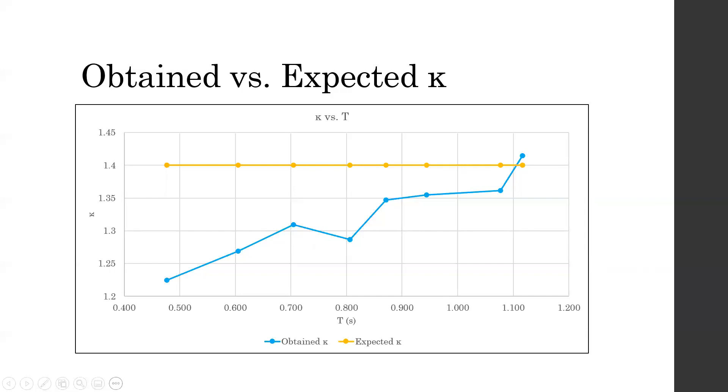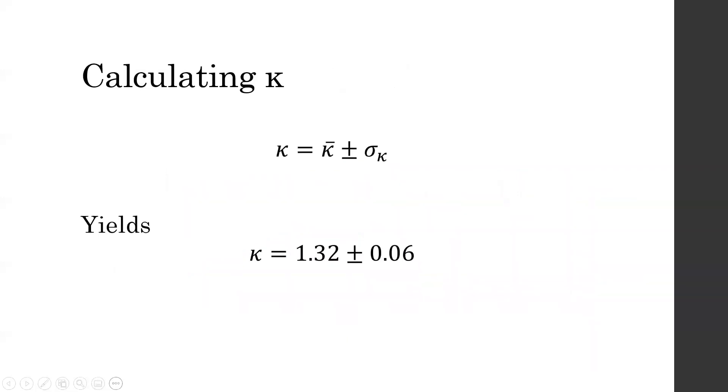However, despite this upward trend, to arrive at a single reported value for kappa, as it should be consistent over all trials, we used the average as the best guess and the standard deviation as the uncertainty. This results in a value of 1.32 plus or minus 0.06 for kappa.